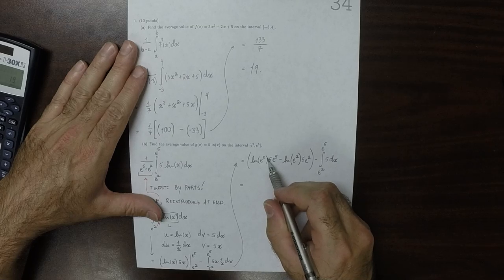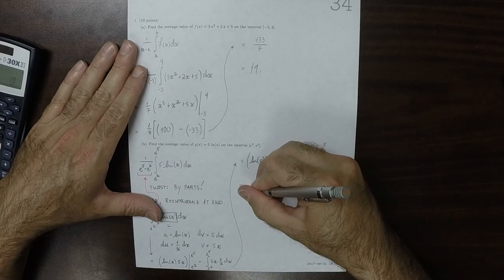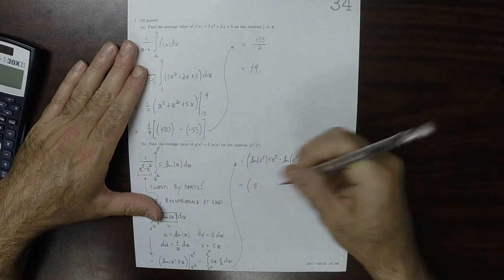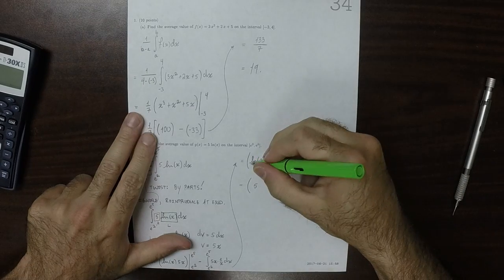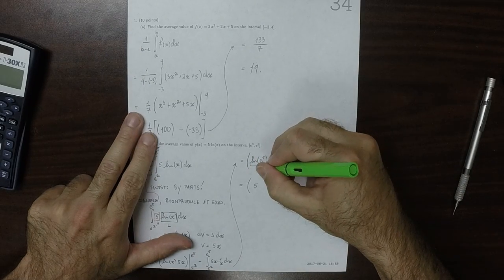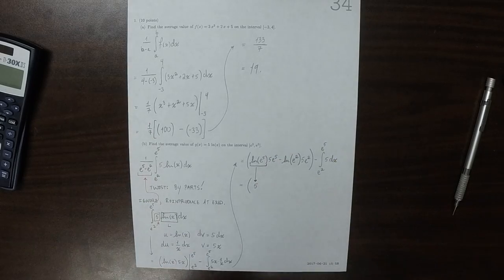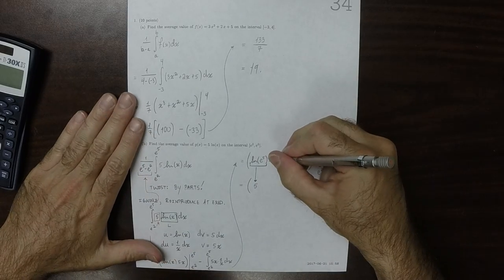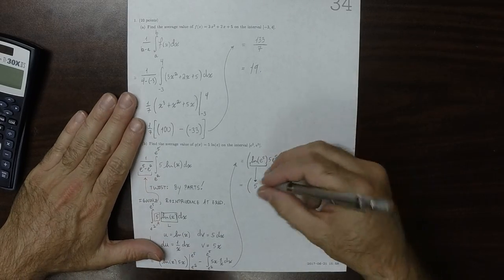the log of e to the 5 is just 5. All of this, log of e to the 5 is 5, and then multiplied by 5e to the 5.